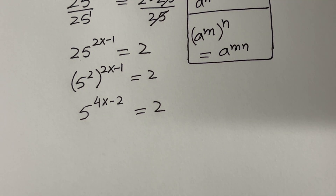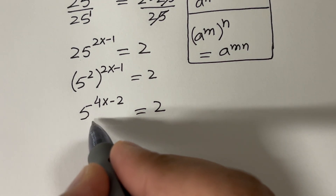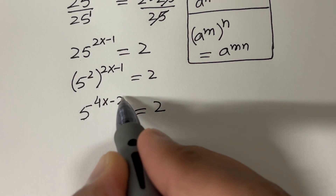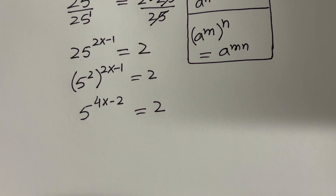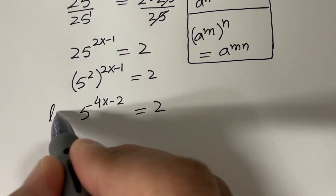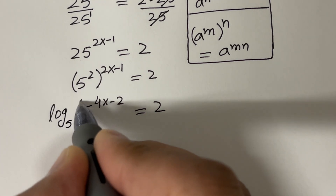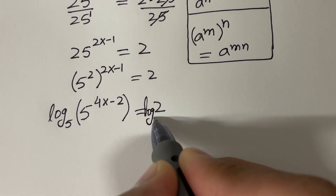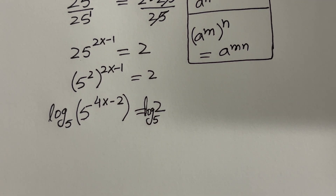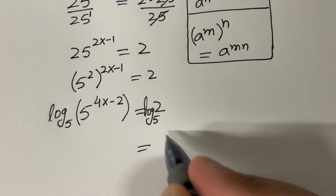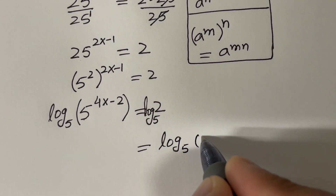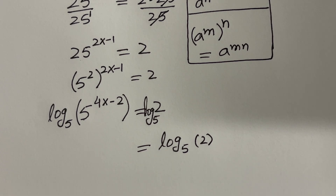Now we have simplified it, so we can apply log on both sides — log base 5 — because we want to bring this exponent down. So we will apply log base 5 on both sides. The right-hand side is log base 5 of 2.